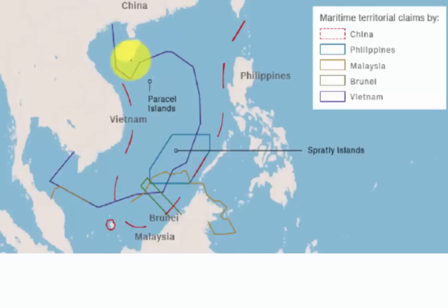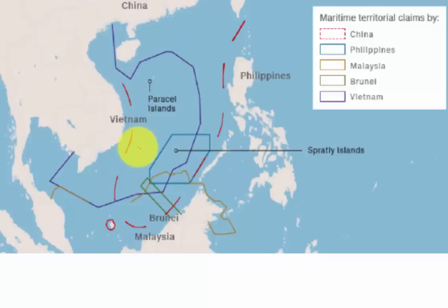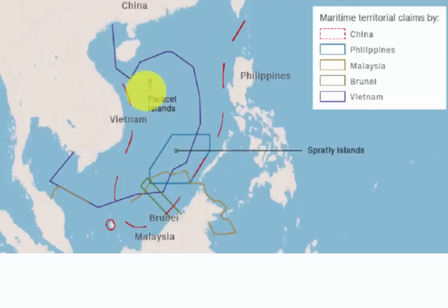However, China in 1947 issued a map in which it marked areas with 11 dashed lines, later reduced to 9 dashed lines. Using these 9 red dashed lines, China claims almost 90% of the South China Sea region, including the Paracel Islands and Spratly Islands.